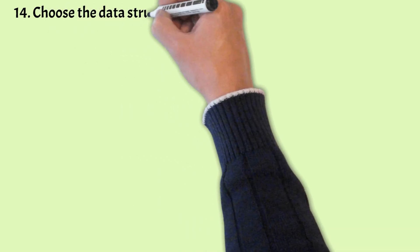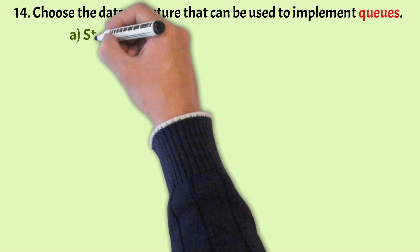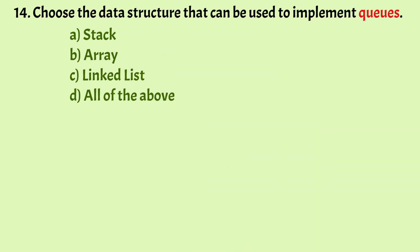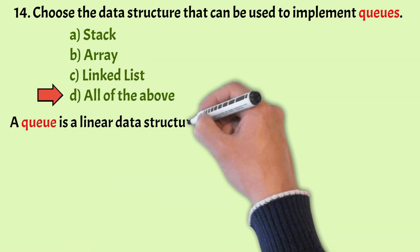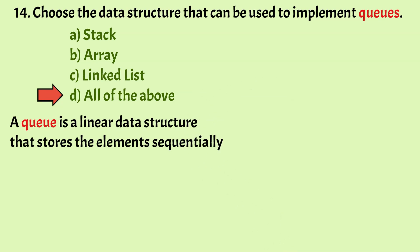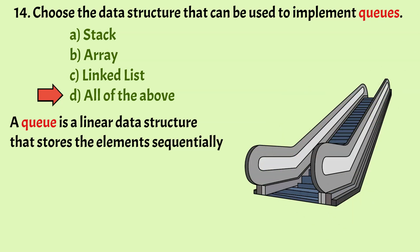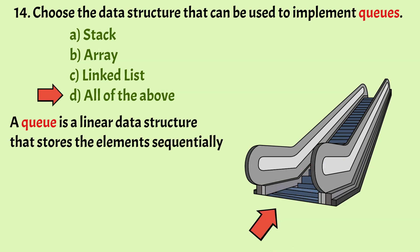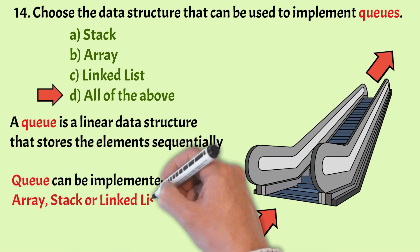The next question: choose the data structure that can be used to implement queues. The options are: Stack, Array, LinkedList, and all of the above. The correct answer is Option D, all of the above. A queue is a linear data structure that stores elements sequentially. Data added first will leave the queue first, just like people on an escalator — a person joins from the end and the person at the front leaves first. A queue can be implemented using Array, Stack, or linked list.